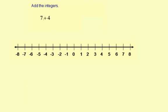Add the integers. 7 plus 4. Well, I think we all know that 7 plus 4 equals 11, but let's take a look at the different representations you can have for that.